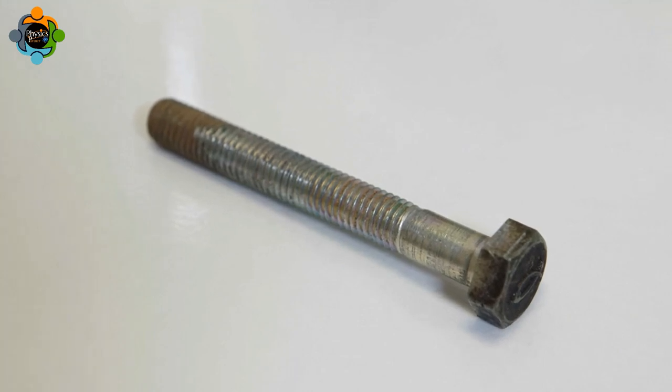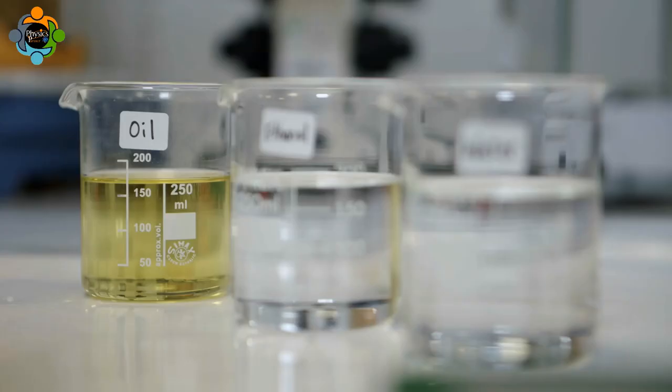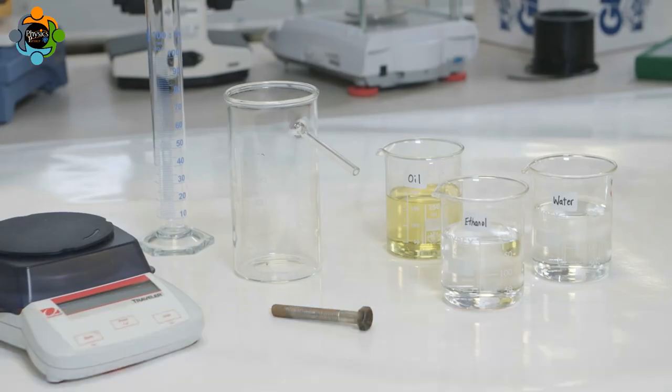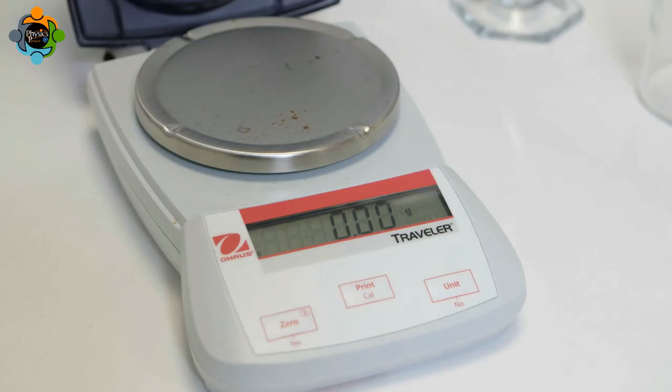In this experiment, the densities of an irregularly shaped object (a bolt) and cooking oil are going to be calculated. To calculate the density of our bolt, two values are needed: its mass and its volume.